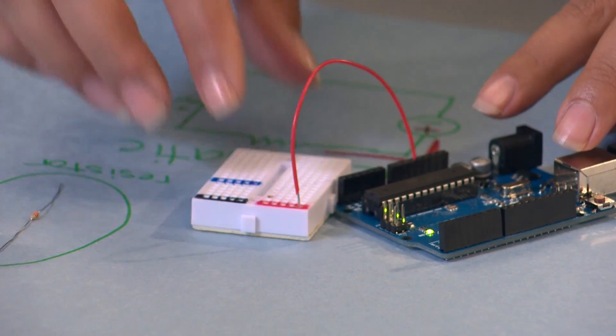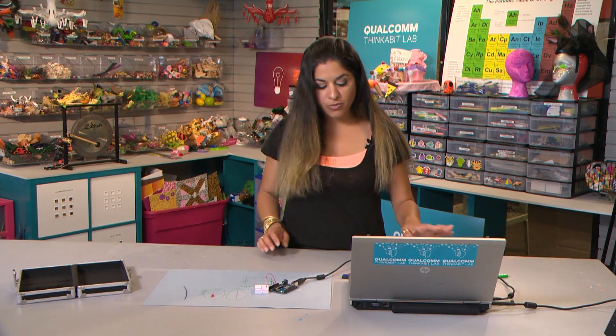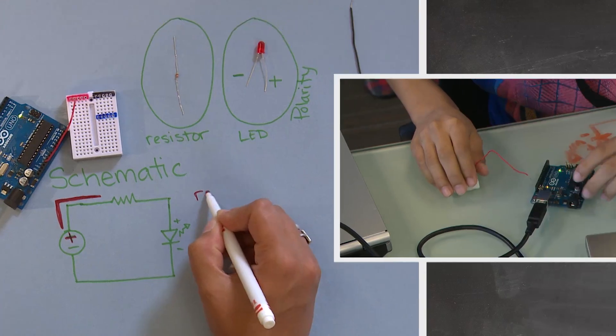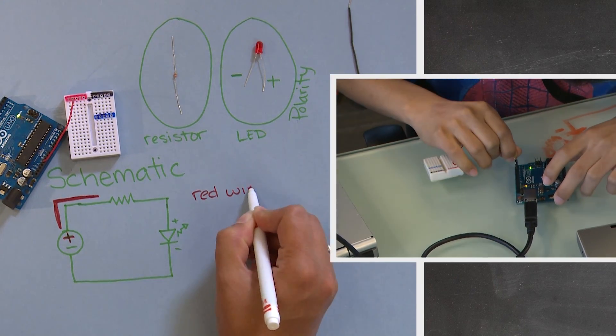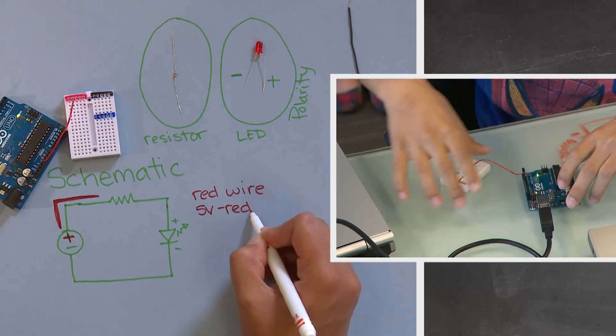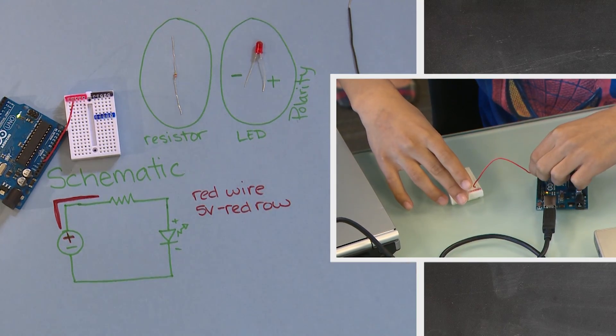Now when you've done that correctly, that entire red row is essentially 5V. So this is what I want you to do. Take your red wire, put it in 5V, and take the other end and put it in the red row of your breadboard.